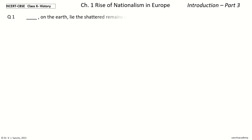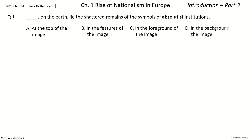Question one: On the ___ lie the shattered remains of the symbols of absolutist institutions. The options are: at the top of the image, in the features of the image, in the foreground of the image, in the background of the image. The answer is: in the foreground of the image.